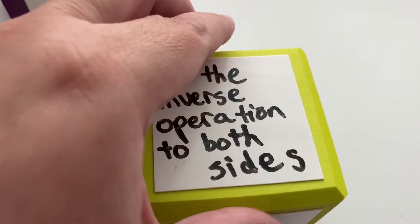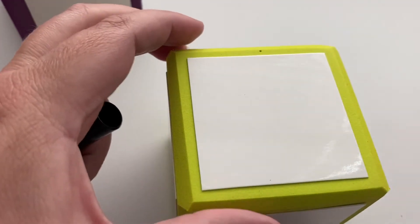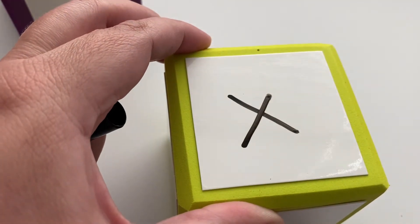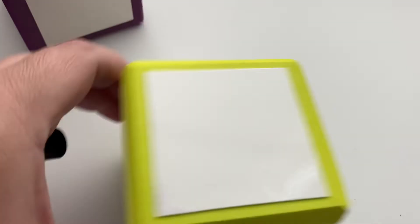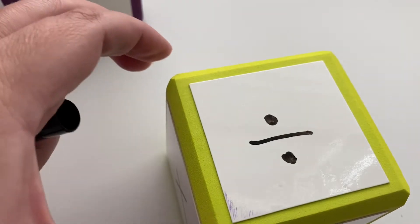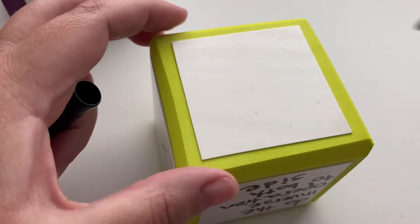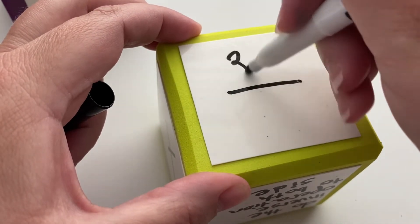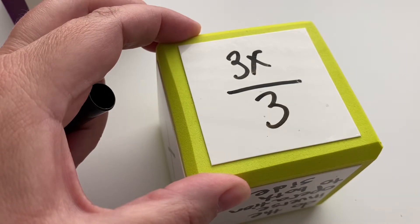Yesterday we talked about the inverse operations of plus and minus going together. And today we're going to talk about multiplying. So the inverse operation of multiplying is dividing. And we're going to use the symbol that looks like a fraction bar. So that is equivalent to dividing.